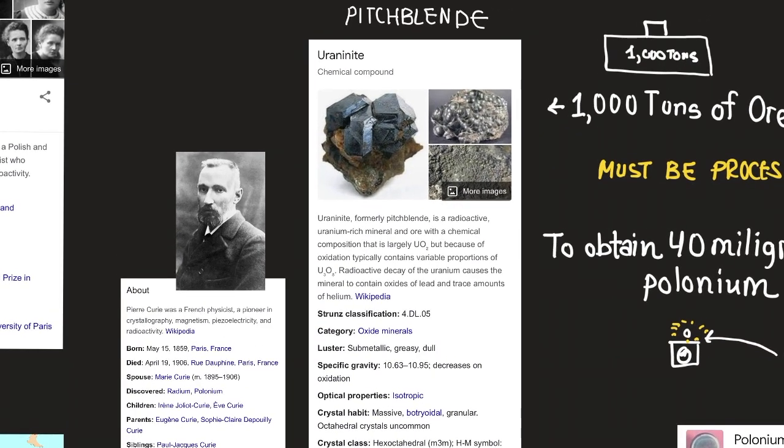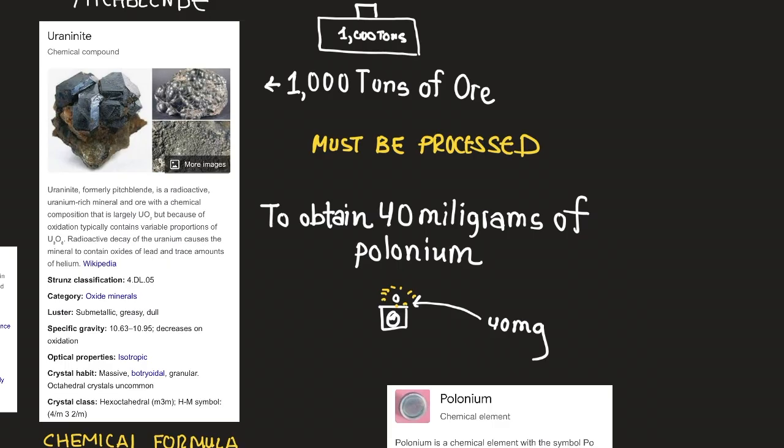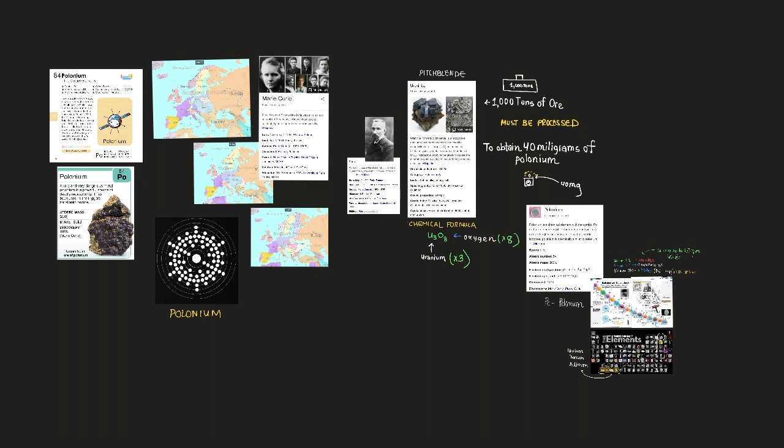Here we have pitchblend. Formerly pitchblende, is a radioactive uranium-rich mineral and ore with a chemical composition that is largely UO2, but because of oxidation, typically contains variable proportions of U3O8. Radioactive decay of the uranium causes the mineral to contain oxides of lead and trace amounts of helium, according to Wikipedia. The very intense radioactivity not attributable to uranium was ascribed to a new element, named by them after Marie Curie's homeland Poland.